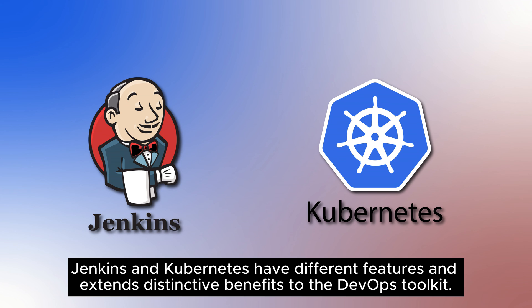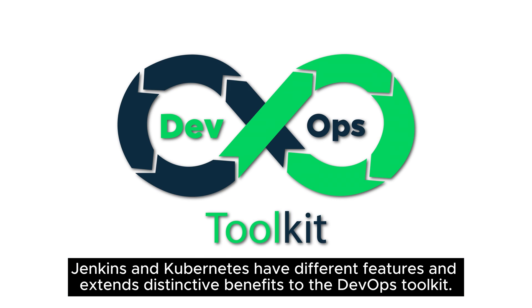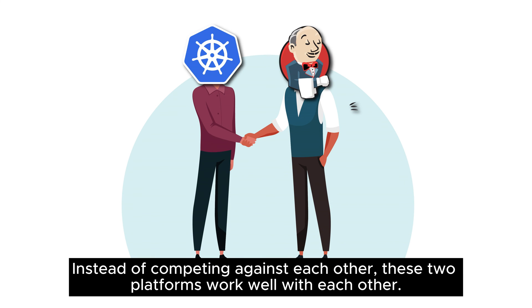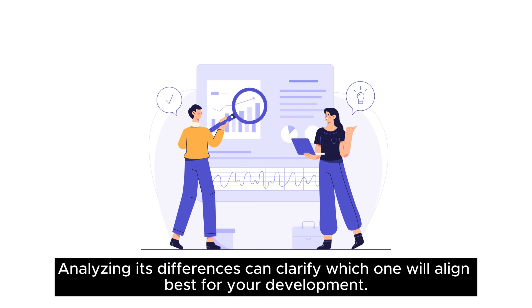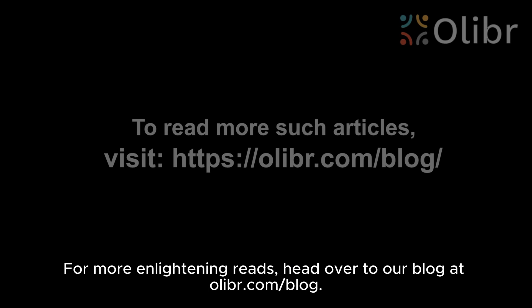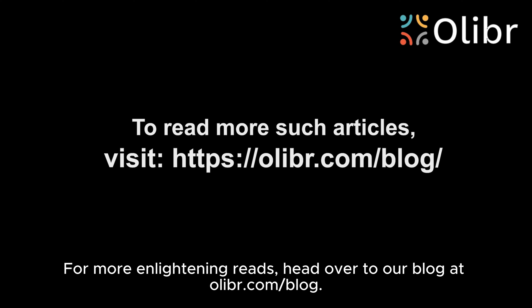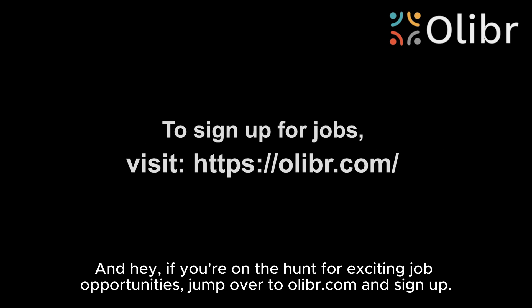Final thoughts: Jenkins and Kubernetes have different features and extend distinctive benefits to the DevOps toolkit. Instead of competing against each other, these two platforms work well with each other. Analyzing their differences can clarify which one will align best for your development. For more enlightening reads, head over to our blog at olibr.com/blog. And if you're on the hunt for exciting job opportunities, jump over to olibr.com and sign up.